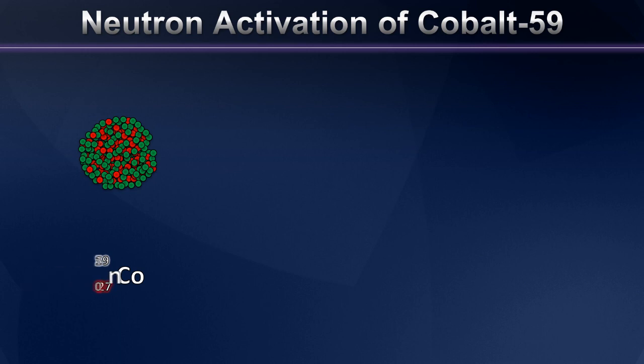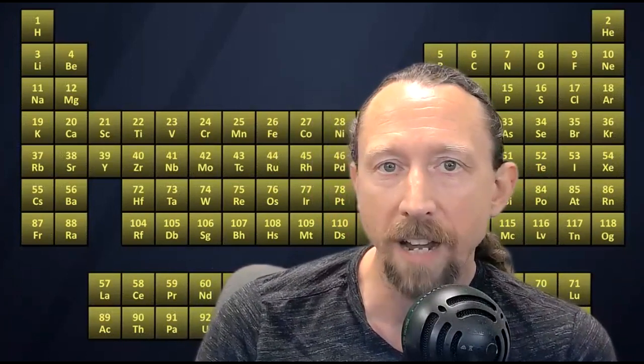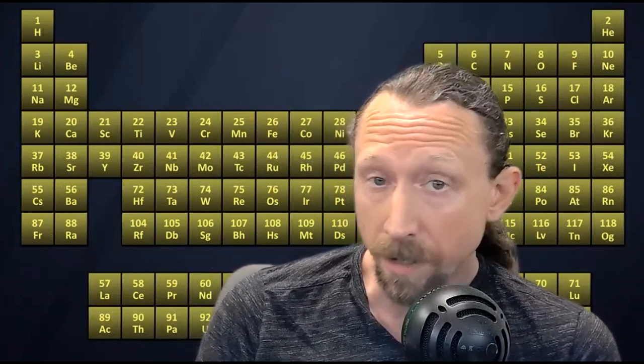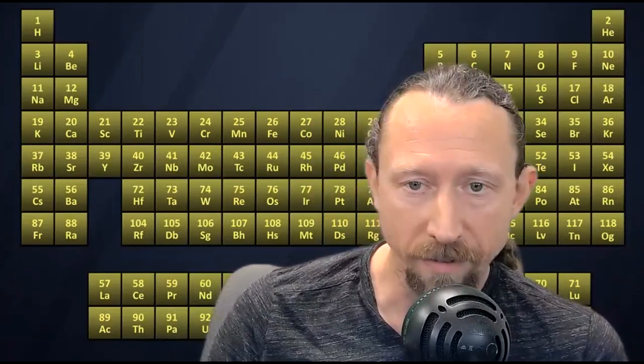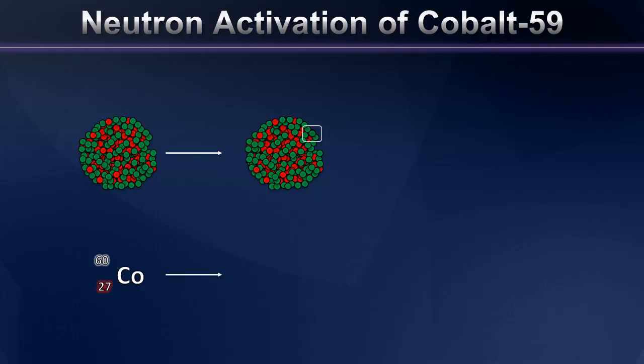And cobalt-60 is a radioactive isotope of cobalt with a half-life of about five years. So what that means is that it would take decades for all of this cobalt to radioactively decay, ultimately losing an electron from the nucleus in a beta decay and becoming stable nickel-60.